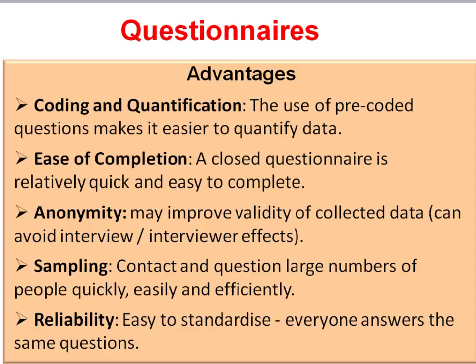Other advantages of questionnaires: this is a method that is practical, relatively quick and easy to complete and administer. In the case of a self-completion questionnaire — one that people fill out in their own time — the anonymity might improve the validity of collected data because respondents are not influenced by the presence of an interviewer. Because it's relatively easy to complete and can be sent out online or via post, you can contact and question large numbers of people in different areas of the country, building up a big and representative sample. It's also the most reliable way of asking questions because everything is standardised — the same questions asked in the same way — so the method can easily be repeated.